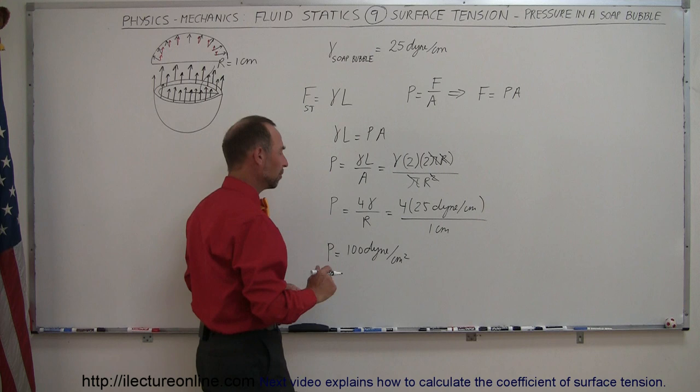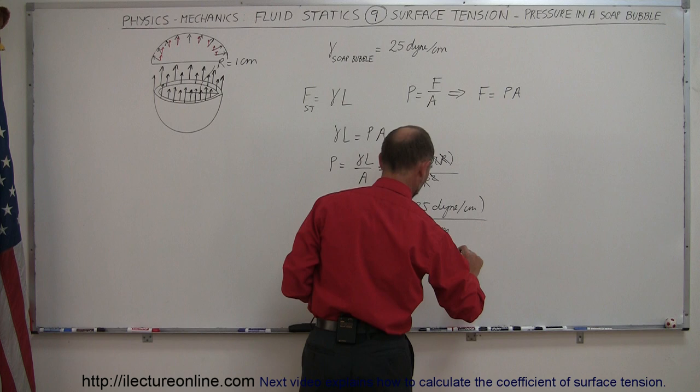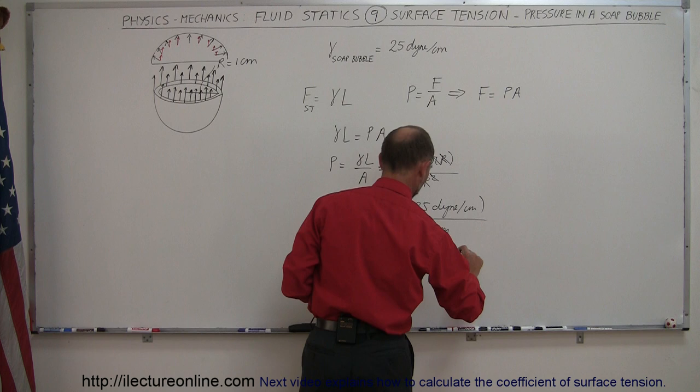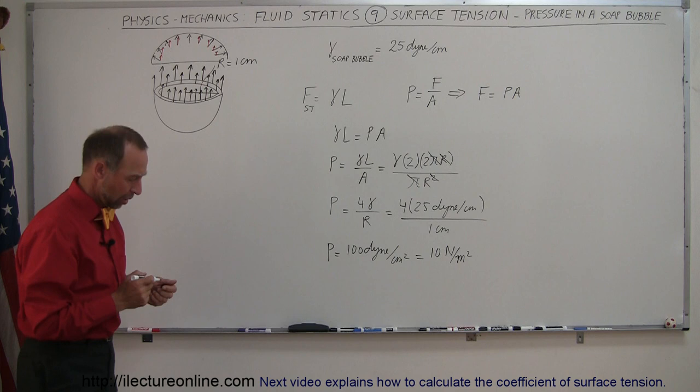If we then convert that to newtons per meter squared, we simply have to divide that number by 10, and we get 10 newtons per meter squared, which is of course a very small fraction of the atmospheric pressure. However, it's measurable, it's there.